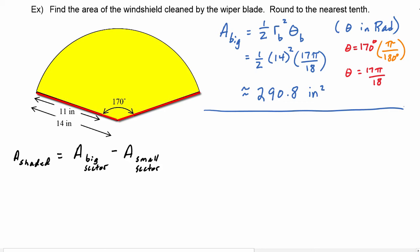We're ready now to find the area of the small sector. So we know the area of the small sector will be one-half times the radius of the small squared times the angle of the small. So this is going to be one-half. Now let's think about the radius of the small sector.